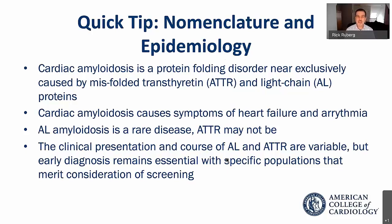We'll discuss that AL amyloidosis epidemiologically is a rare disease, but ATTR amyloidosis is an emergingly recognized disease and is probably not as rare as we think it is. We'll also talk about the clinical course and prognosis of ATTR and AL amyloidosis, and emphasize that early diagnosis remains absolutely essential in specific populations that merit screening, so that we can get patients the best possible care as early as possible when it's likely to be most effective.